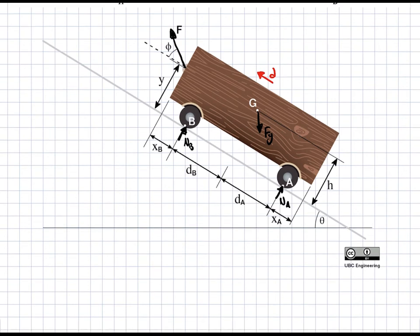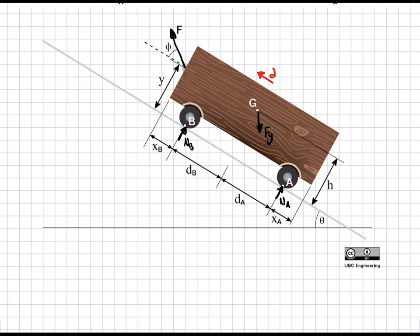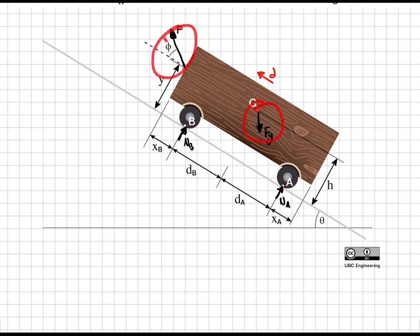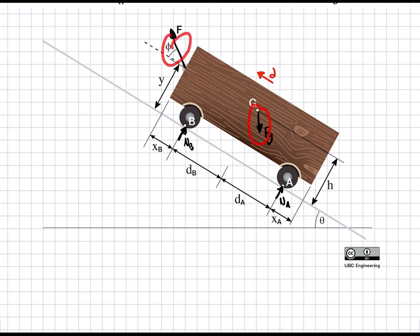Since we've drawn all our forces, we can now draw in our coordinate system. For simplicity, always pick a coordinate system that reduces calculations, especially when doing a moment balance. In this case, the normal forces and gravity components are perpendicular or parallel to the slope, so we align our coordinate system with the slope. Three forces will be purely perpendicular or parallel, whereas two forces will need cosine and sine — it's simpler to calculate components for two forces than for three.